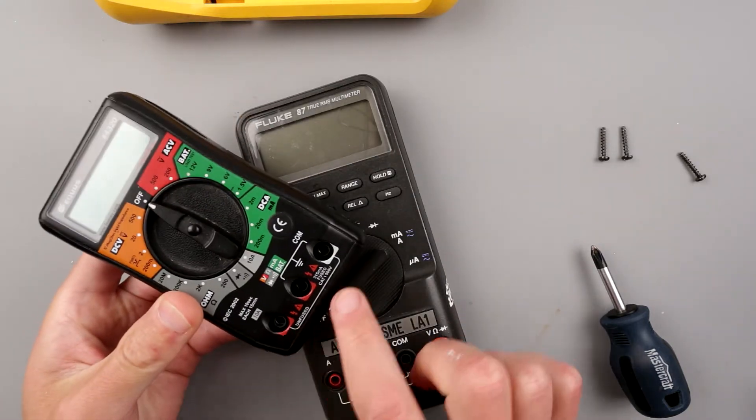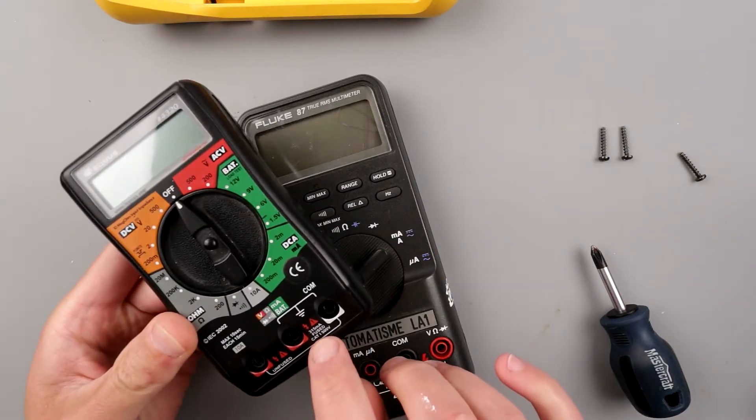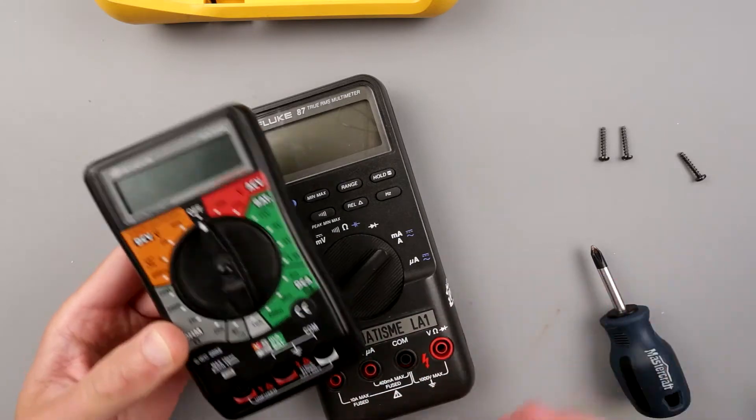And look at this, 10 amp range is unfused, awesome. But the 315 milliamp range is fused, I don't know, whatever.